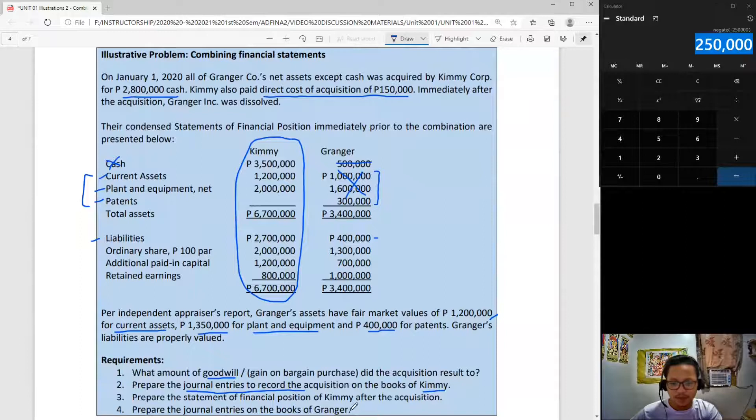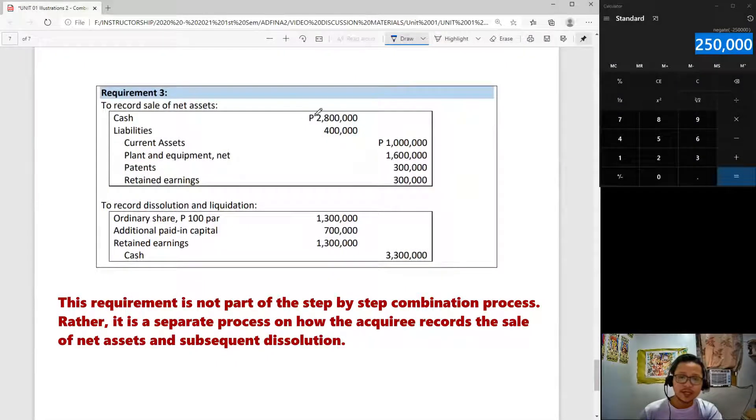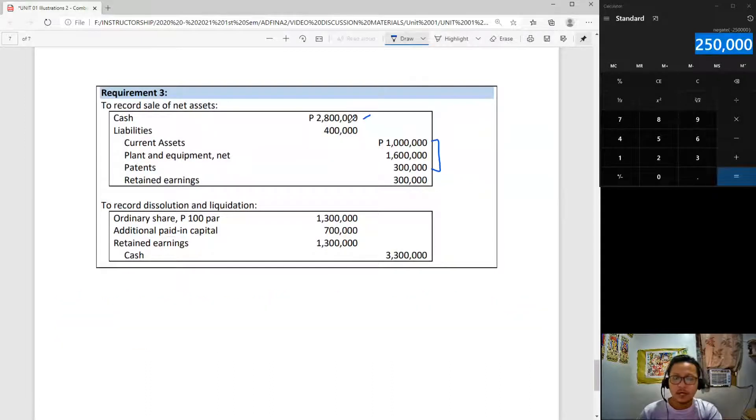We will be moving on to our last requirement. We are required to prepare the journal entries on the books of Granger. Granger the acquiree has forgone all of his assets except cash and all of the liabilities in exchange for cash of 2,800,000. In the books of Granger, the entry would look like this: Granger receives cash of 2,800,000 but gives up all of the assets - these three at their book values - and we also have liabilities debited because they were transferred to Kimi.